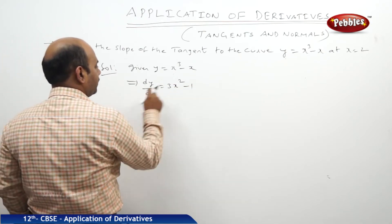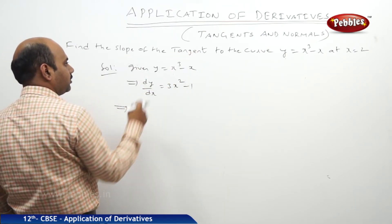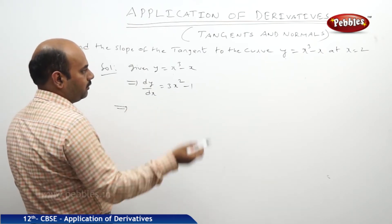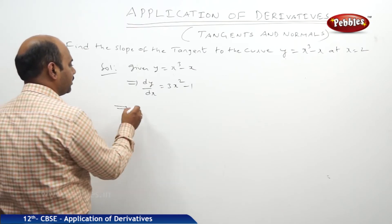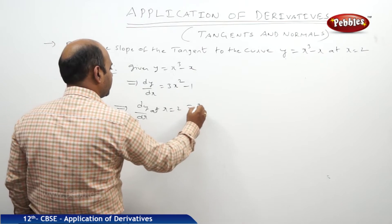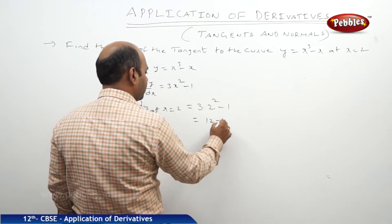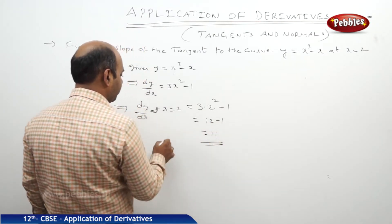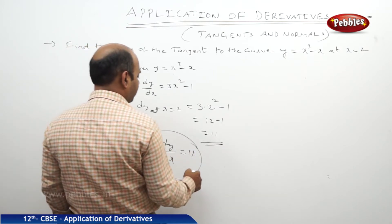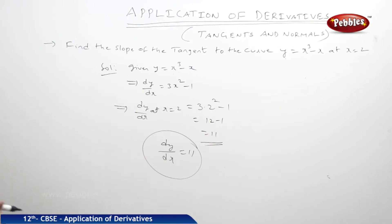dy/dx always represents slope, but we are required to find the slope of the tangent to the curve at the point x = 2. That means, wherever we have x, we substitute that value. So dy/dx at x = 2 is 3(2²) - 1 = 3(4) - 1 = 12 - 1 = 11. Therefore, the slope of the tangent to the curve is 11.